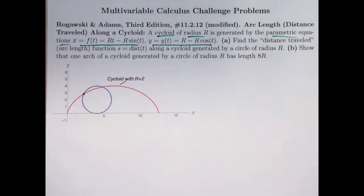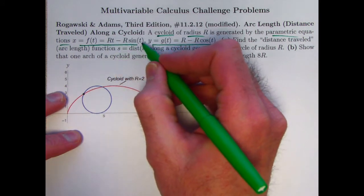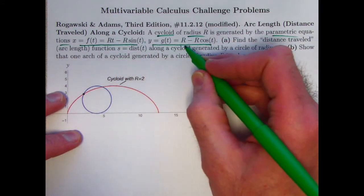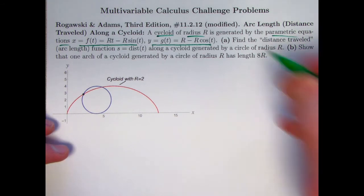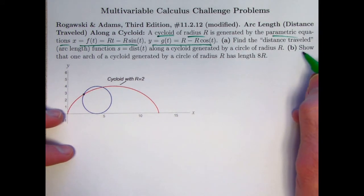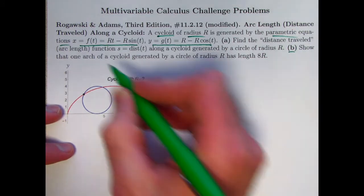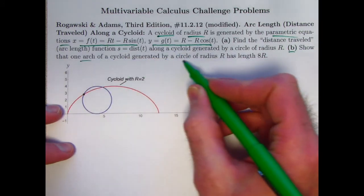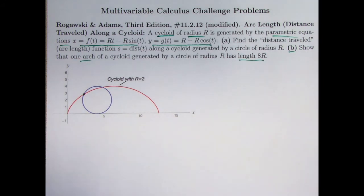X and y are both functions of t. t is the parameter — you can imagine t to be time. X equals f of t equals r times t minus r sine t, and y equals g of t equals r minus r cosine t. This is problem 11.2.12, problem number 12 in section 11.2. The main thing to do there is part b: show that one arch of the cycloid generated by this circle of radius r has arc length 8r.